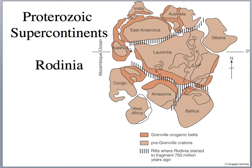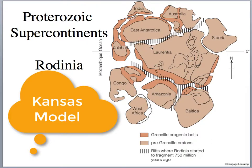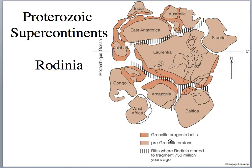Once we rift Laurentia from East Antarctica, we're going to develop the Paleo-Pacific Ocean — the beginning of the Pacific Ocean. We don't have a Pacific Ocean yet; this is going to be the birth of the Pacific Ocean, and this rift began around 750 million years ago. At this time, the model to think about is that Laurentia, or at least the Western United States, was in the middle of the supercontinent Rodinia. I call this a Kansas model, because it's like Kansas in the middle of North America. California — mainly the Death Valley region — was in the middle of this large Rodinian supercontinent.